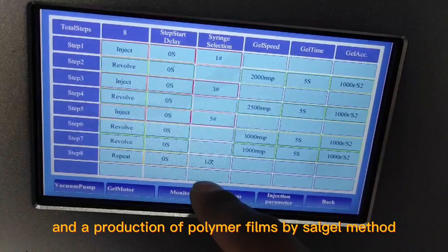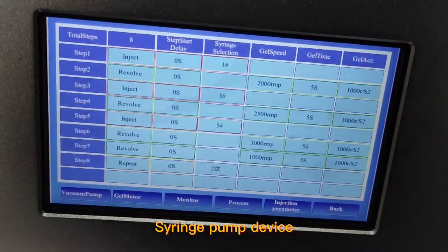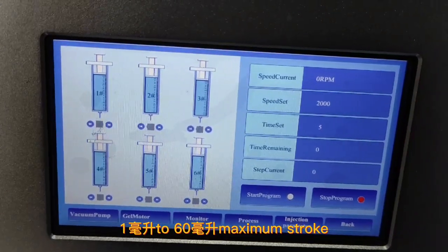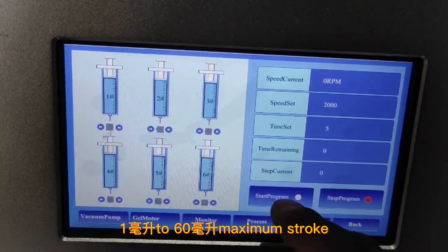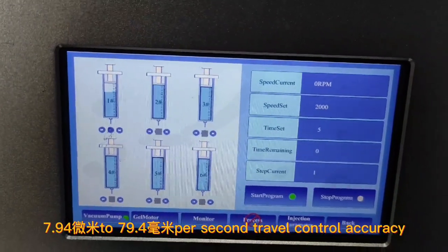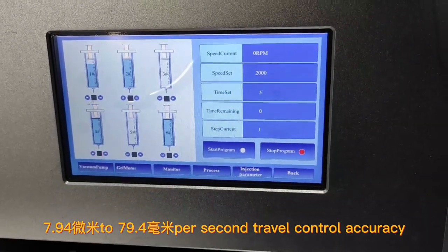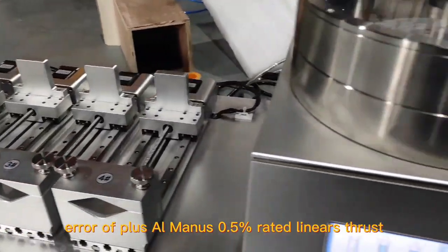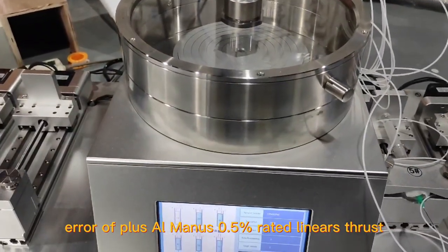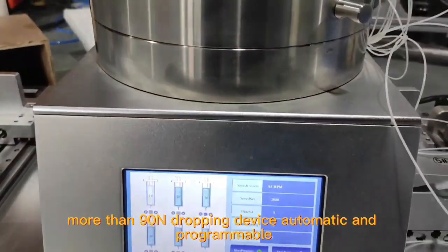Syringe pump device: applicable syringe specification, 1毫升 to 60毫升; maximum stroke, 90毫米; linear speed range, 7.94微米 to 79.4毫米 per second; travel control accuracy, error of plus or minus 0.5%; rated linear thrust, more than 90N; dropping device automatic and programmable.